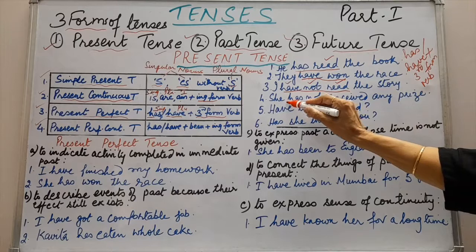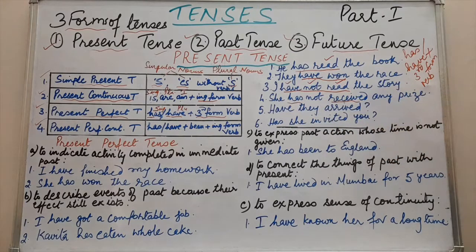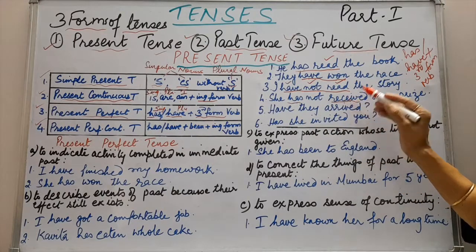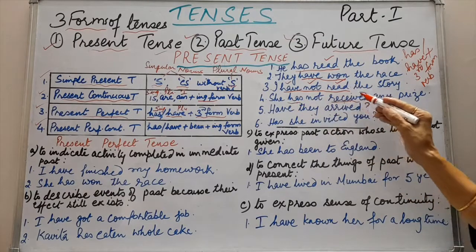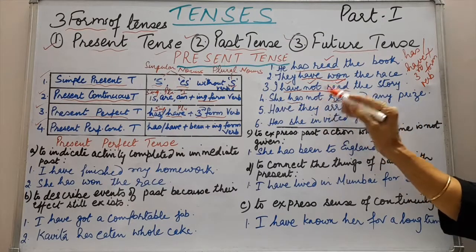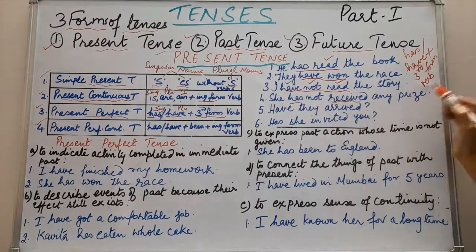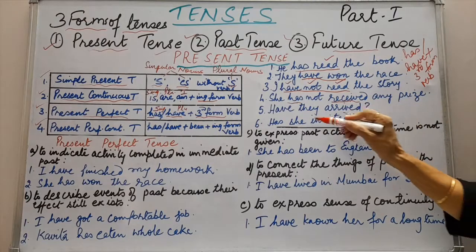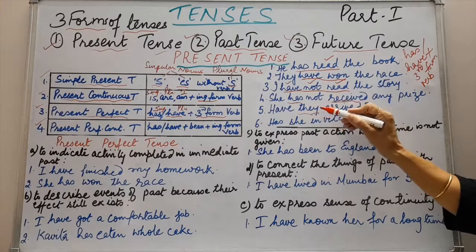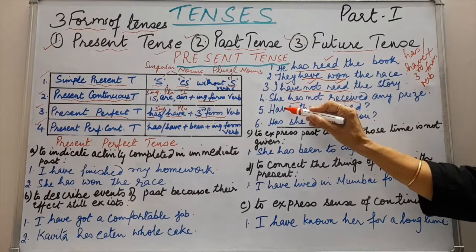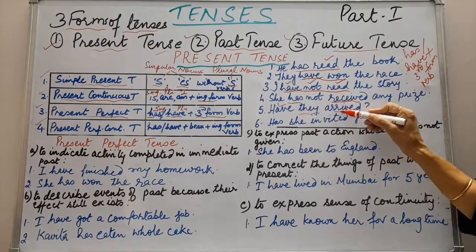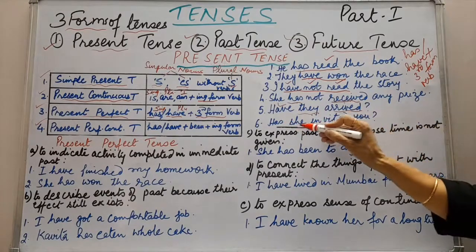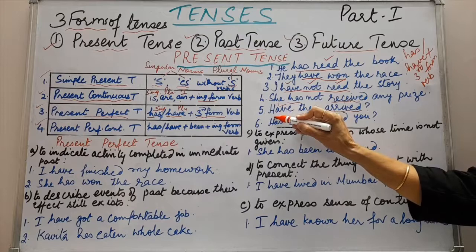She has not received any prize — she is singular, so we have used has. Third form of verb is received. Since it is a negative sentence, we have split the auxiliary and main verb and used not in between. Interrogative sentences: have they arrived? — they is plural, so the sentence begins with have, followed by the third form of verb arrived. Has she invited you? — she is singular, so we have used singular verb has at the beginning.